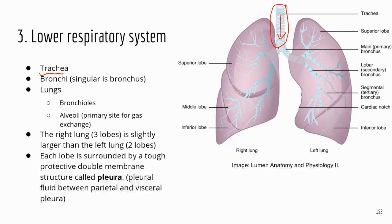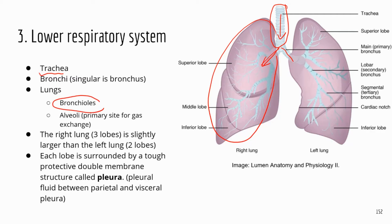After the trachea, you have two bronchi — the singular is bronchus. Each bronchus goes into each lung, so the right bronchus brings air to the right lung. Inside the lungs, the bronchi branch off into smaller tubes called bronchioles, and eventually at the end you have alveoli. Alveoli are the primary site for gas exchange and they look like clusters of grapes — basically small air sacs.